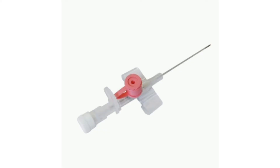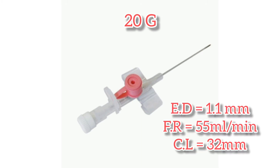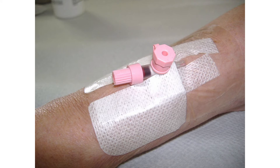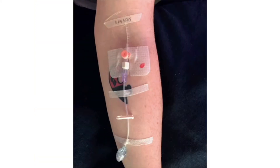The pink colored cannula has gauge 20. Its external diameter is 1.1 mm and the flow rate is 55 ml per minute. Catheter length is 32 mm. It is the ideal cannula for IV infusion and drug administration.